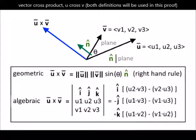Times the unit normal vector n. In the algebraic definition, u cross v equals, in symbolic matrix notation, the determinant of the 3 by 3 matrix shown. Both definitions of cross product will be used in this proof.